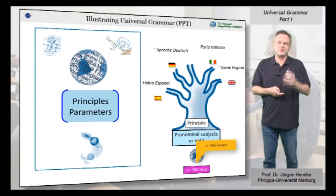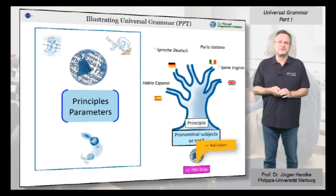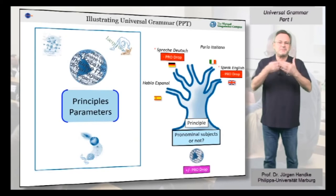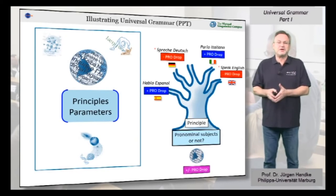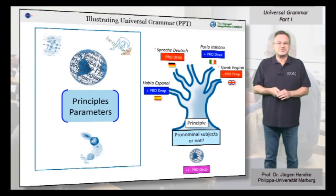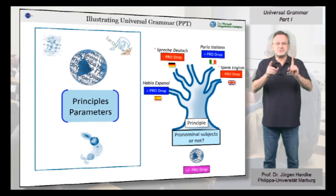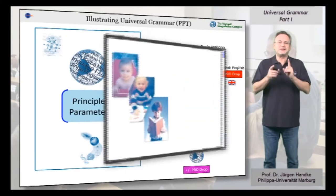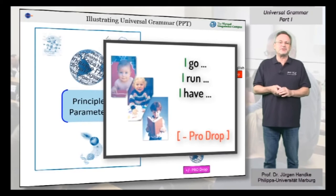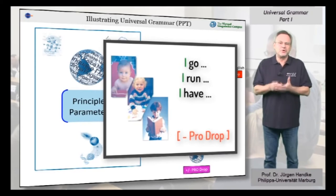The pro-drop parameter is also called the null subject parameter. It is set minus for English and German, where the pronoun cannot be dropped, and plus for Italian and Spanish. The idea is that as soon as children encounter a few sentences of this type, this pro-drop parameter would be set, and the children would know whether they could drop the subject in those sentences or not.